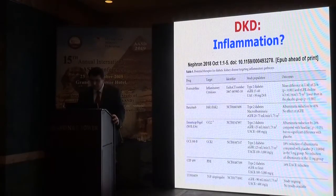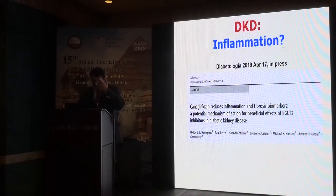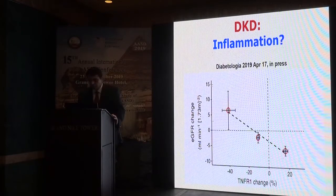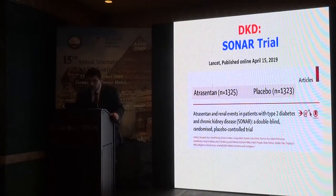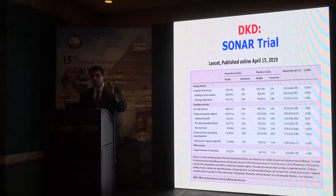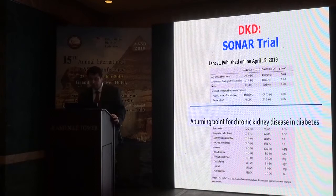Regarding inflammation in diabetic kidney disease: several drugs have been used in trials to reduce inflammation, such as pentoxifylline, pirfenidone, and chemokine receptor antagonists. Drugs such as HIF-2 inhibitors have reduced markers of injury such as tumor necrosis factor receptor 1. The SONAR study addressed atrasentan, an endothelin receptor type A antagonist, and found it may be kidney-protective through reduction of proteinuria and preservation of GFR. This may represent a turning point for chronic kidney disease in diabetes.